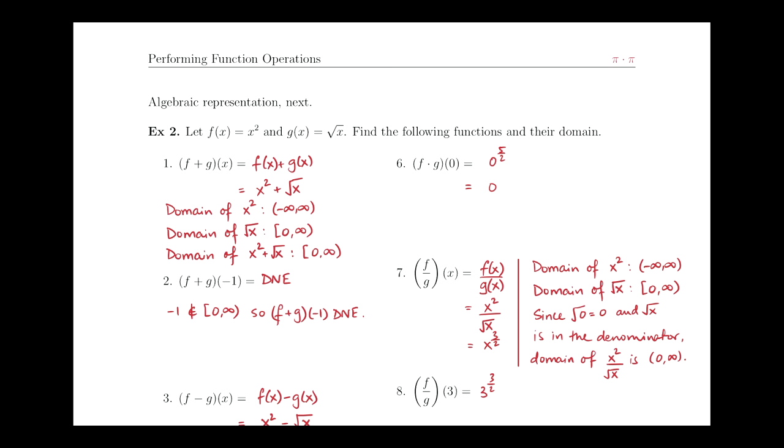So the domain of x squared, x squared is your friendly neighborhood parabola, it's defined everywhere, is negative infinity to positive infinity. And the domain of square root of x, remember that we cannot take the square root of negative numbers and get real numbers as answers. So it has to be non-negative numbers, which means it could be zero, because I can find the square root of zero, and it has to be all positive numbers beyond that.